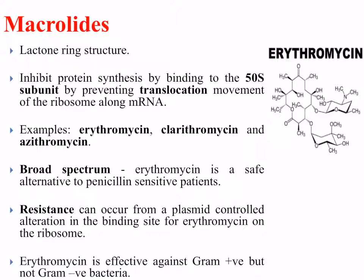Erythromycin is an example of the macrolides; others include clarithromycin and azithromycin. These tend to be broad-spectrum antibiotics. Erythromycin is a safe alternative for penicillin-sensitive patients, and resistance can occur from a plasmid-controlled alteration in the binding site for erythromycin on the ribosome. Erythromycin is effective against gram-positive but not gram-negative bacteria.